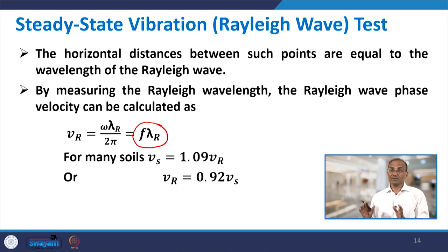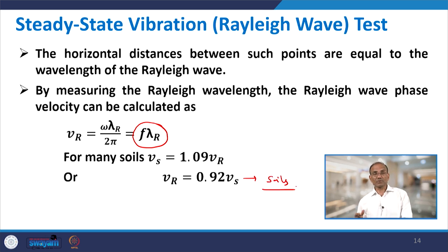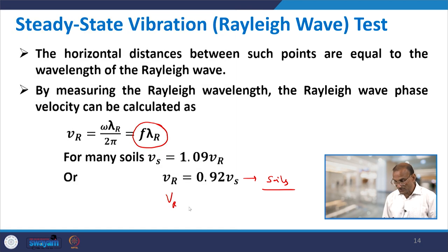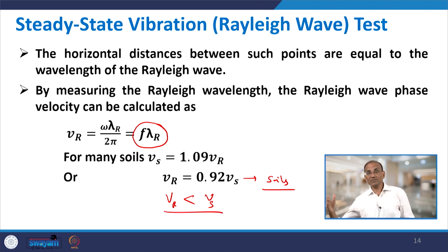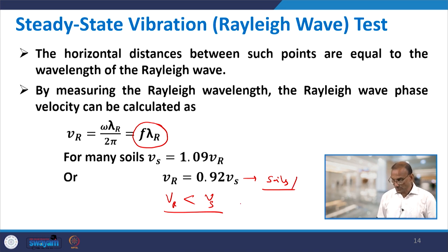The Rayleigh wave velocity is less than the shear wave velocity. For soils, the shear wave velocity Vs is roughly 1.09 times V_R, meaning V_R is approximately 92% of Vs. For any Poisson's ratio or any material, V_R will always be less than Vs. As Poisson's ratio increases, the difference between V_R and Vs decreases. For soils V_R may be around 0.96 Vs; for rocks the ratio can differ slightly.